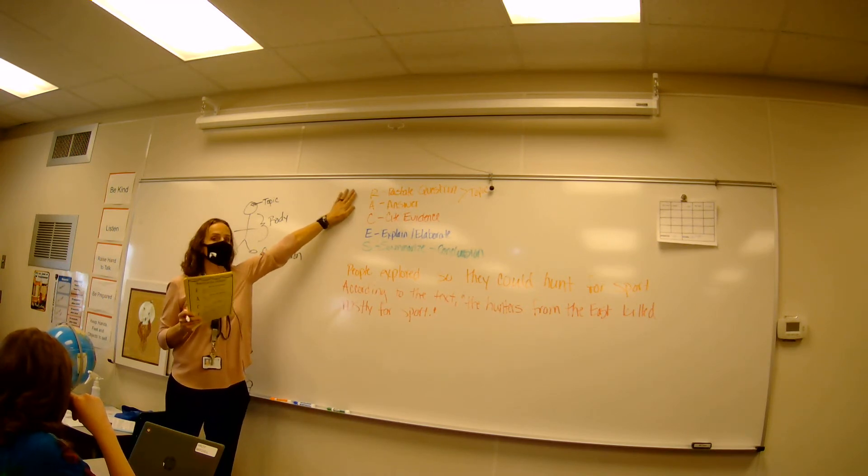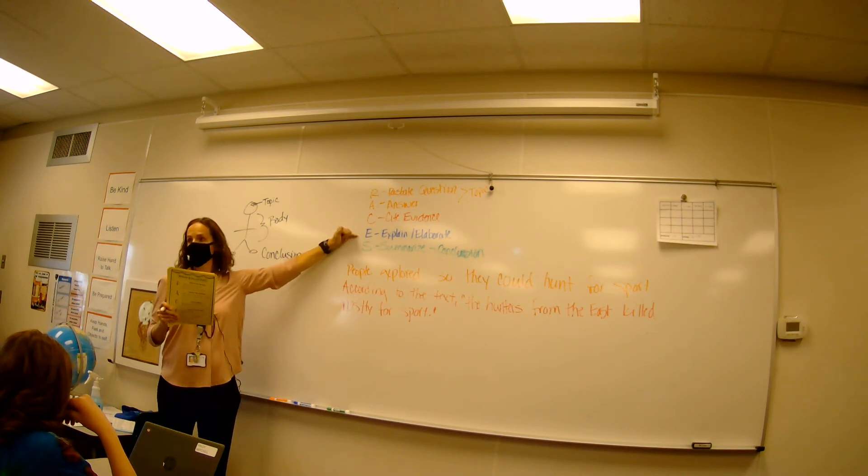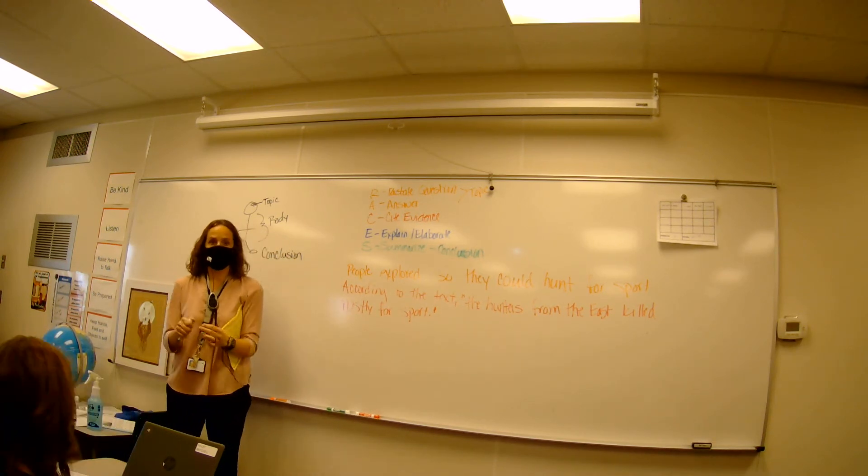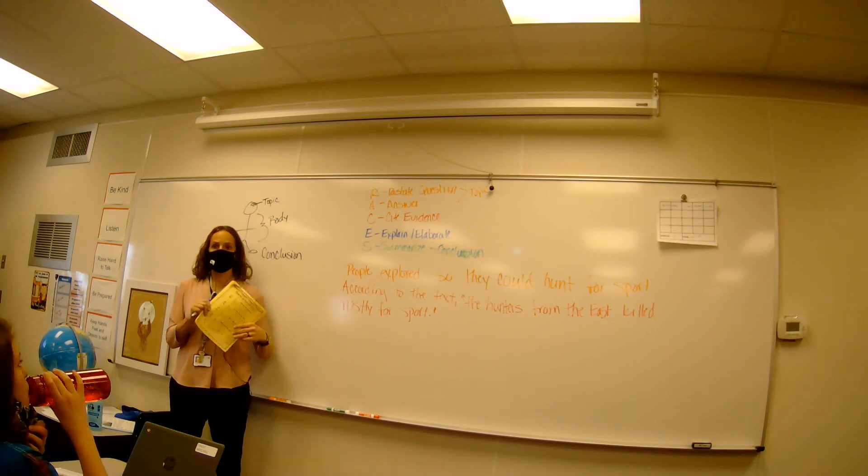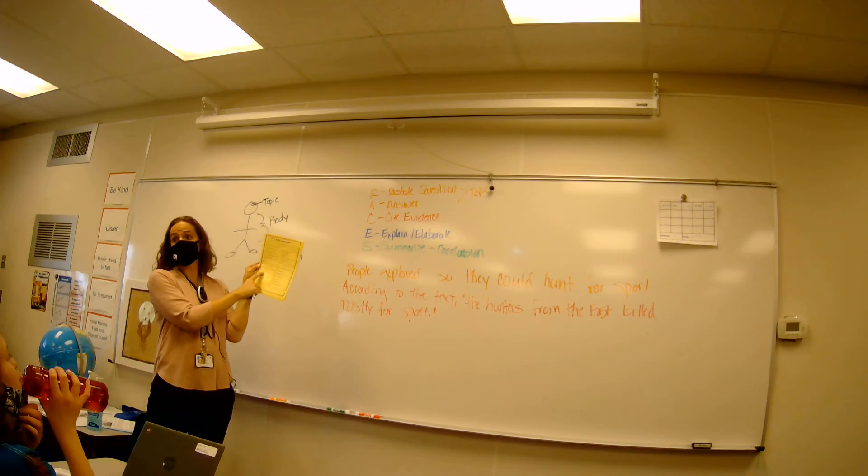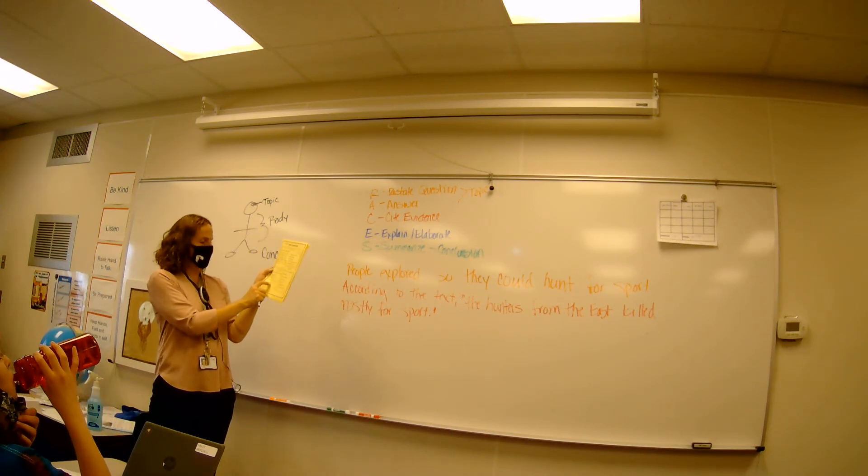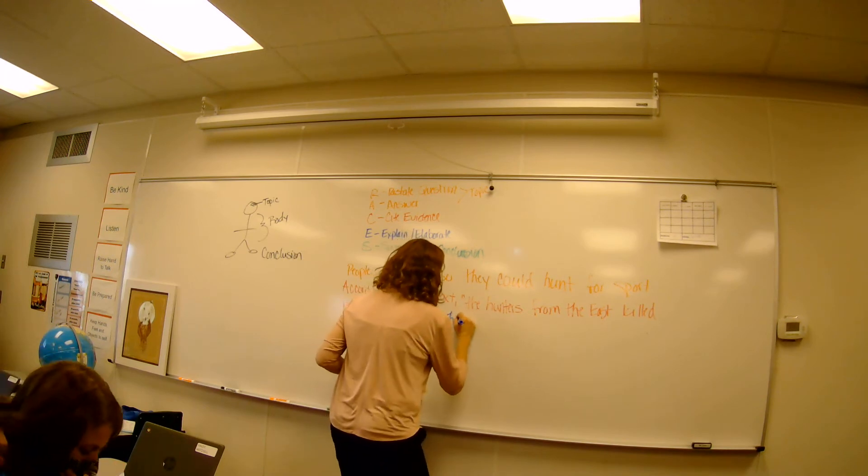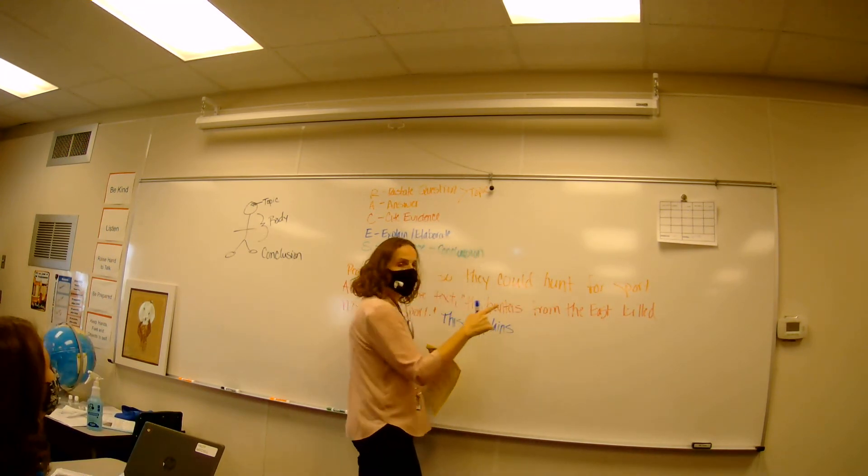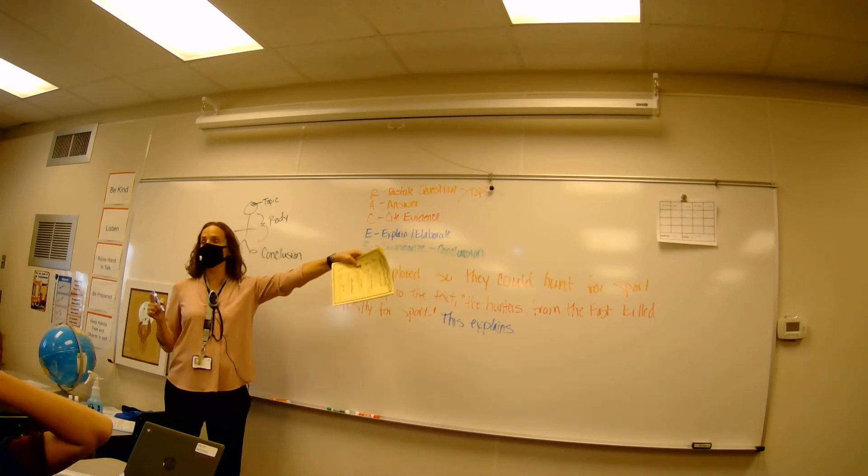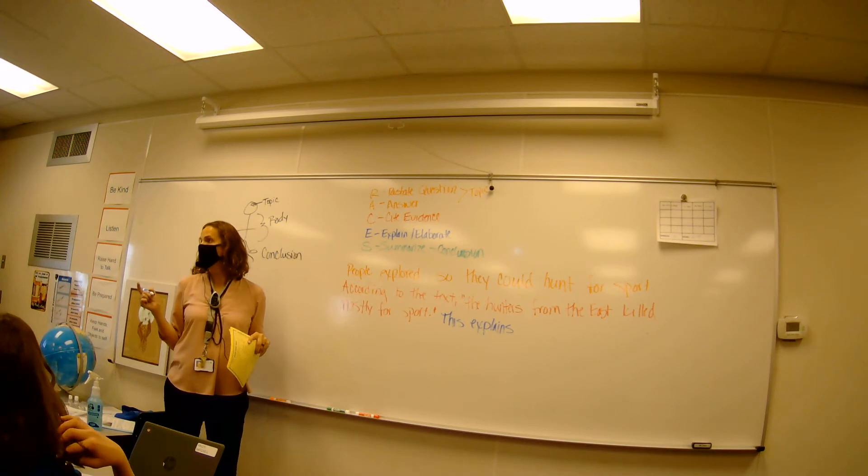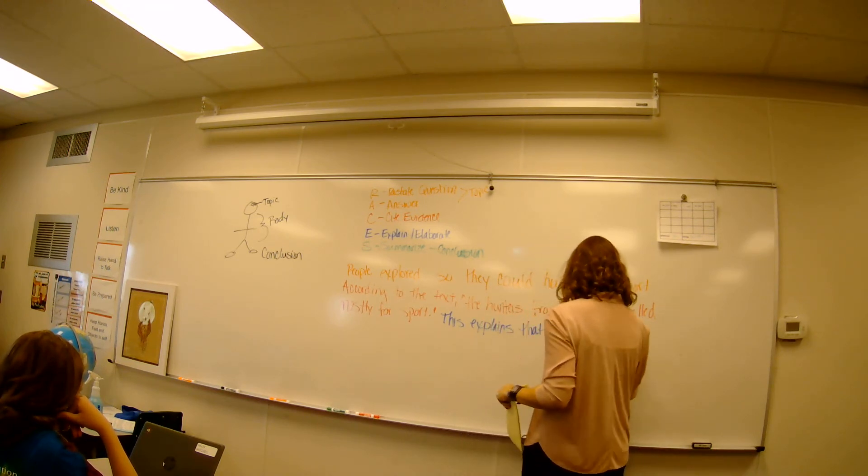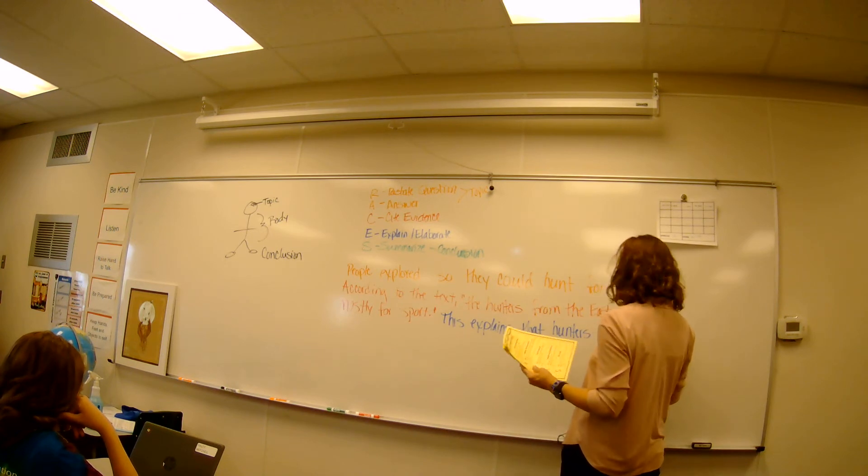I need to explain it. So elaborate. So what do I say here? How do I elaborate on this quote? This is, so let's go to our elaborate. You can say this shows, this proves, this makes me think, this explains, it means, what would you want to say here, Jordan? Okay. So this explains that, what are we trying to talk about? That people hunters came just for fun. Is that what you said?